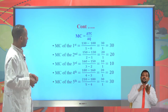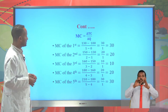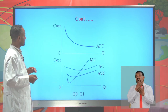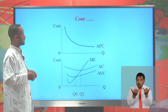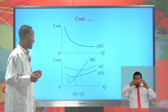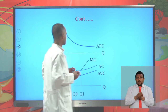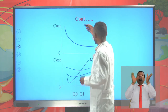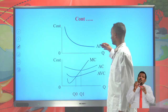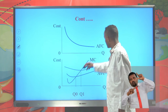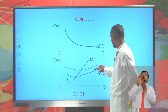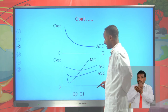This is the way of calculating the marginal cost of production. The average fixed cost curve is a continually declining curve. This is the marginal cost curve, this is the average total cost curve, and this is the average variable cost (AVC) curve.